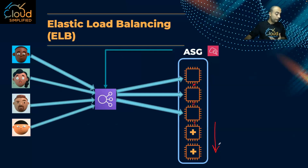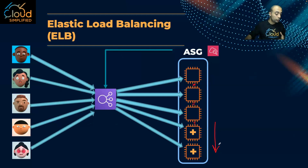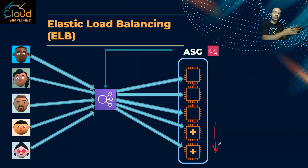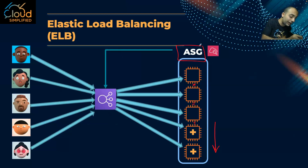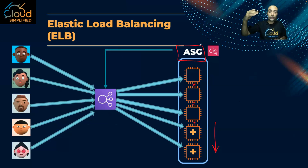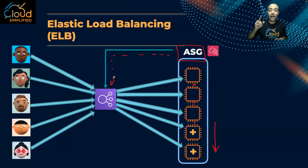When user number four arrives, they get load balanced to server number four. When user number five arrives, she gets load balanced to server number five. As you can see, the ELB acts as a single point of contact — users from the internet land on the ELB, which distributes load across multiple EC2 instances inside the auto scaling group. When above the threshold, auto scaling creates extra instances and updates the ELB to balance new users across them, preventing overloaded servers.